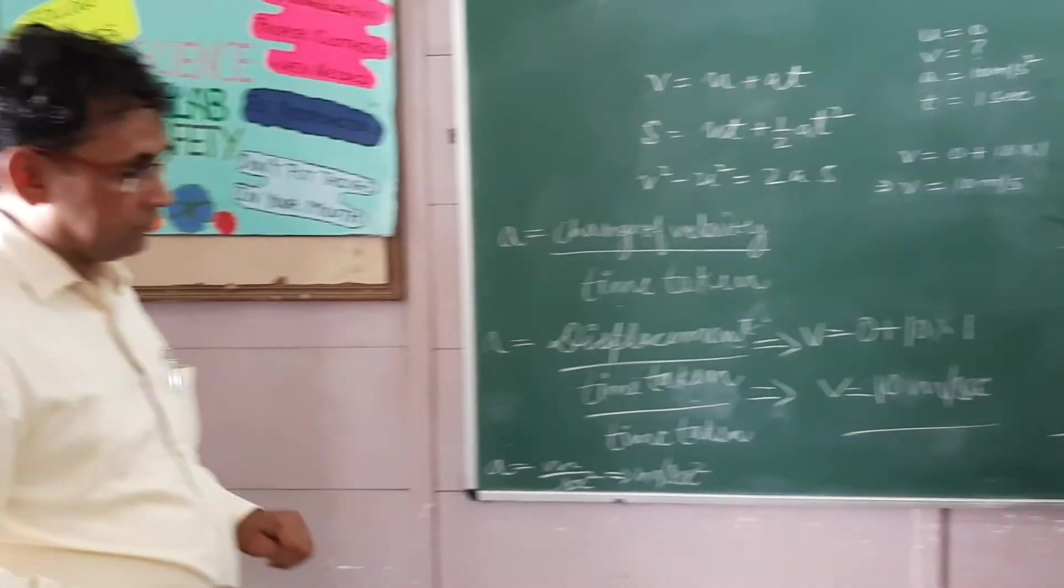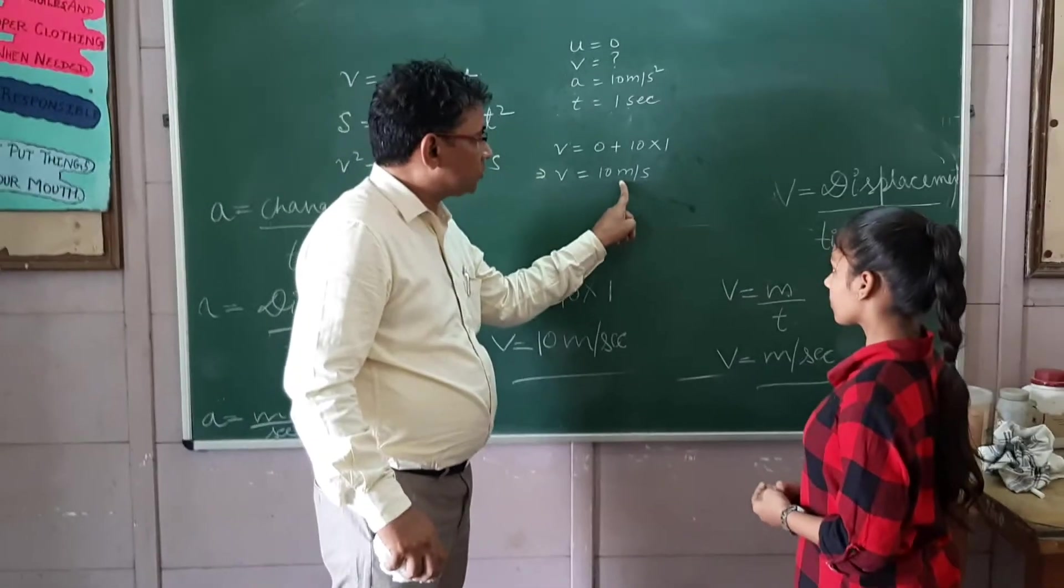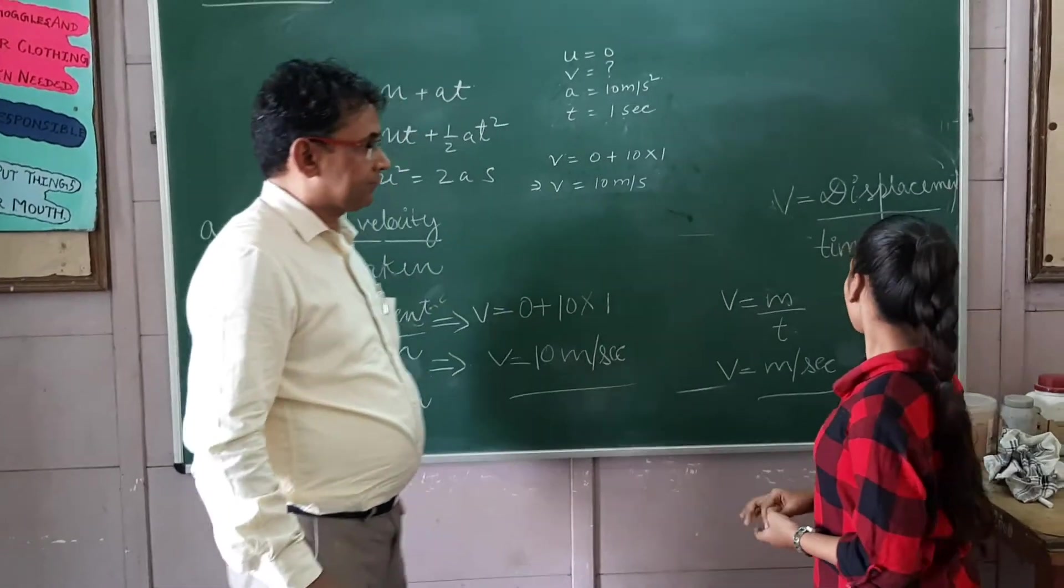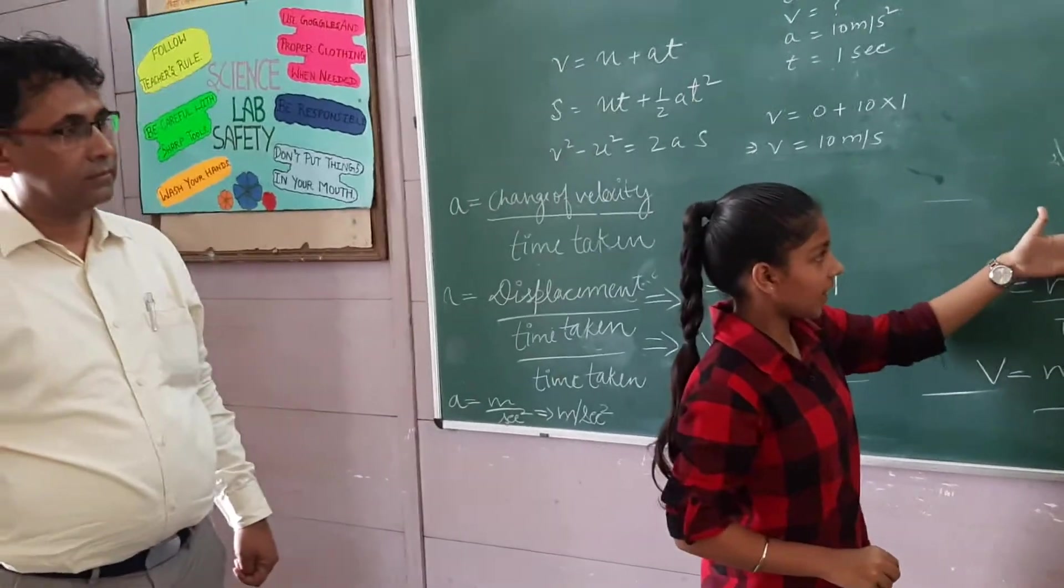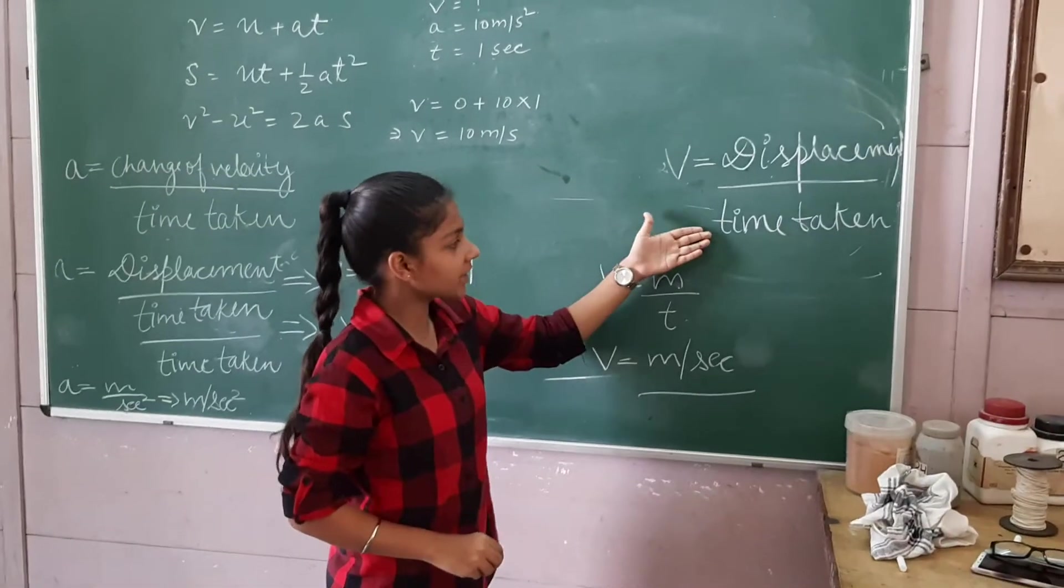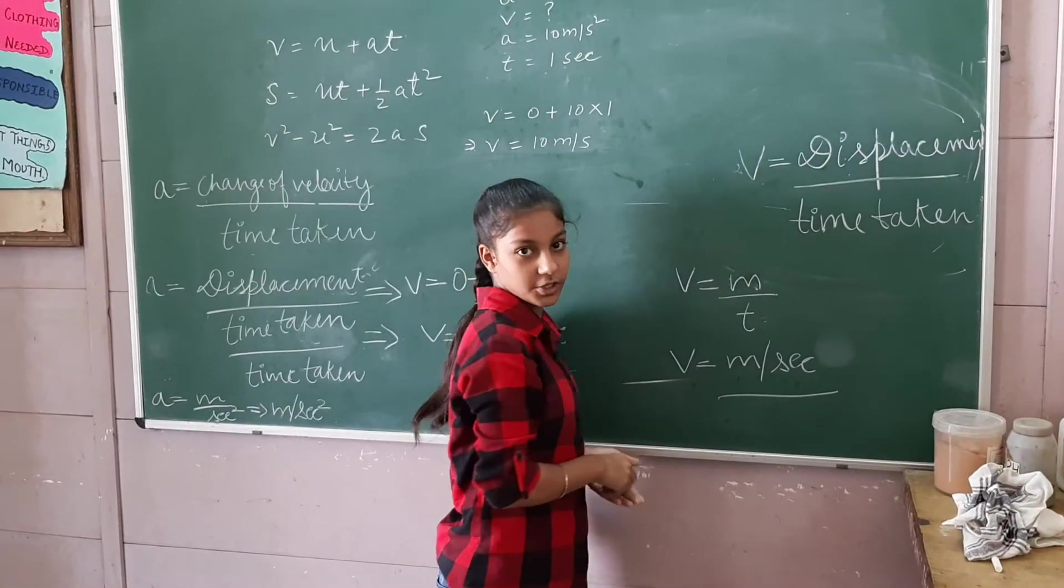Now Vanushka, I have a question for you. Why is the unit of acceleration meters per second squared? Because velocity is meters per second, displacement is meters, and time is seconds. Hence we have meters per second squared. Very good.